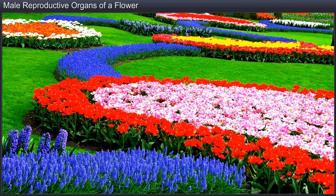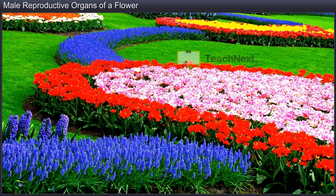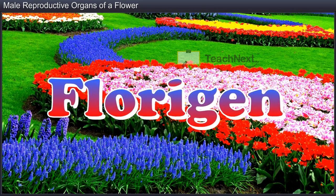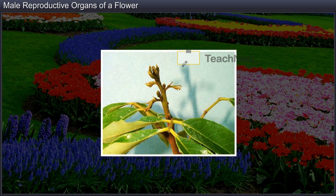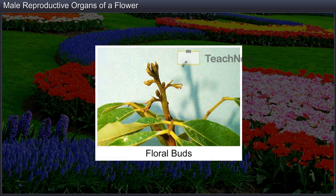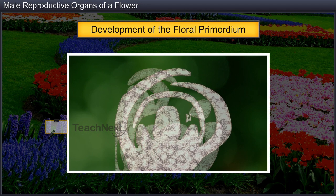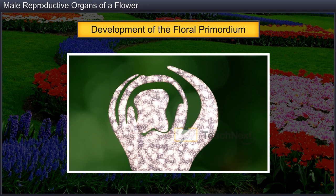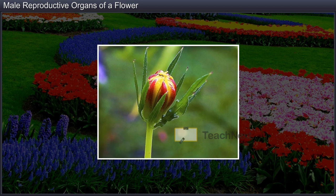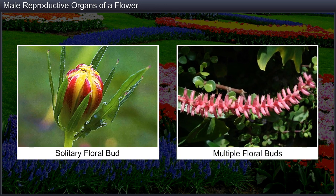This phase is however preceded by several physiological and morphological changes induced by hormones such as florigen present in the leaves. These changes lead to the differentiation of vegetative buds into floral buds and the development of the floral primordium, the rudimentary or preliminary stage of the flower or the flowering shoot. This primordium either bears a solitary floral bud or inflorescences that bear multiple floral buds.